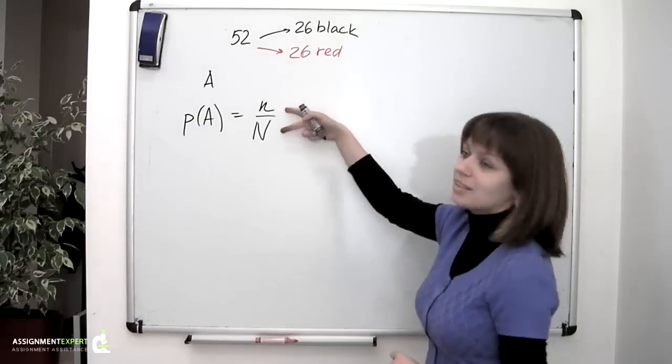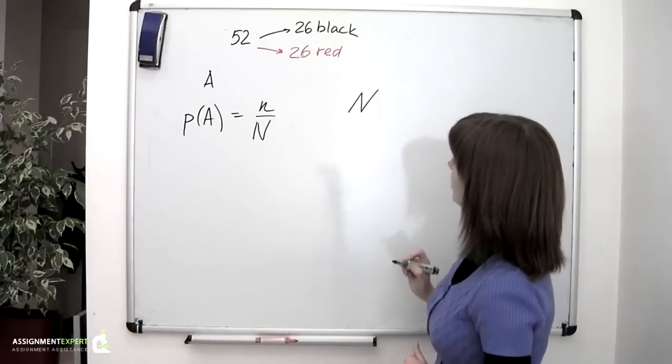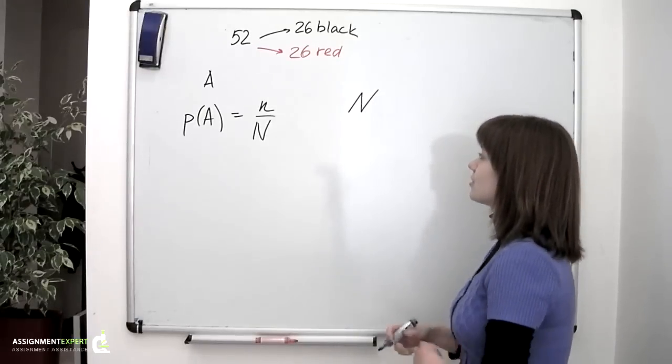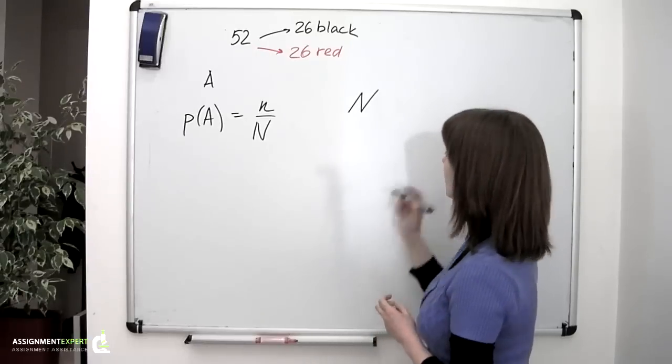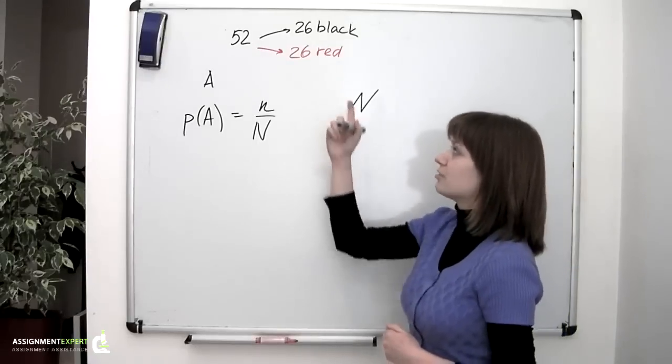So we now need to calculate these two Ns. The capital N, or the total amount of possible outcomes, is the number of ways in which we can pick four cards out of 52.